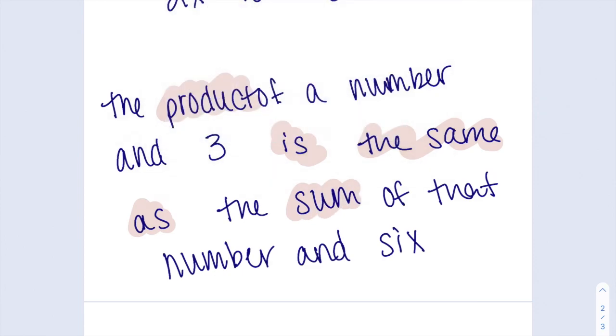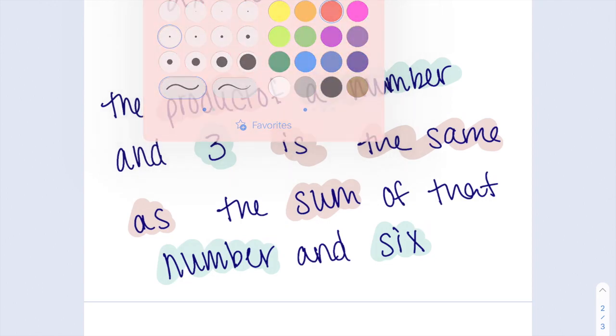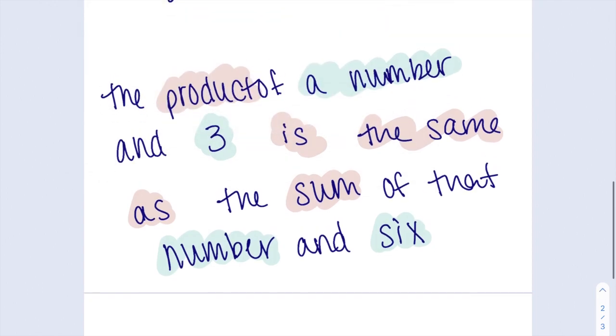Now I'll highlight all of the numbers that I see. Here it says a number, which means I'll have a variable and the 3. And then again, I hear right here, it says number and 6. I think we have an even kind of split of things. The first part I'm going to look at is right here, the product of a number and 3.